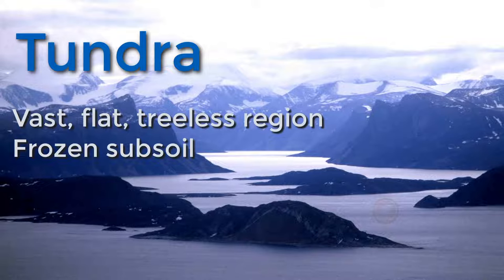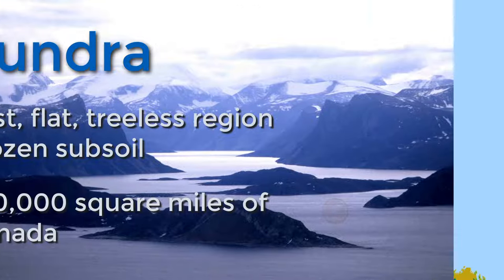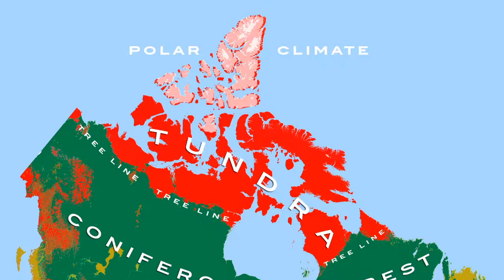Tundra occupies approximately 550,000 square miles across a number of Canadian provinces, including the Yukon, the Northwest Territories, Nunavut, and parts of Manitoba, Ontario, Quebec, and Labrador.